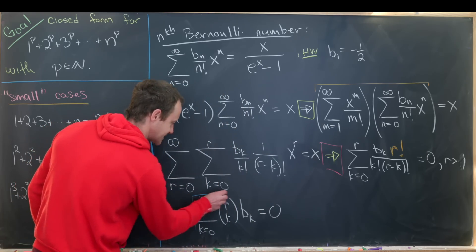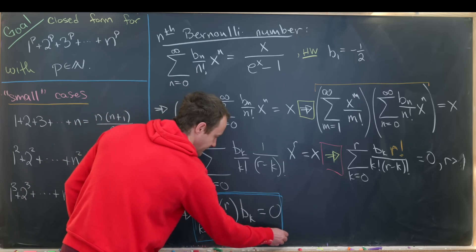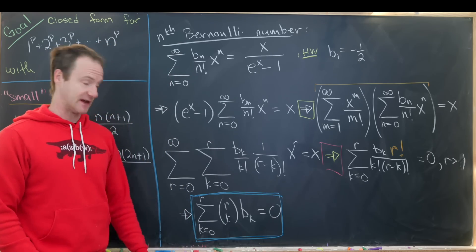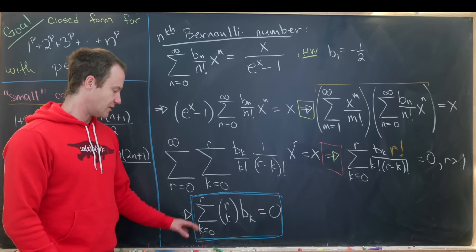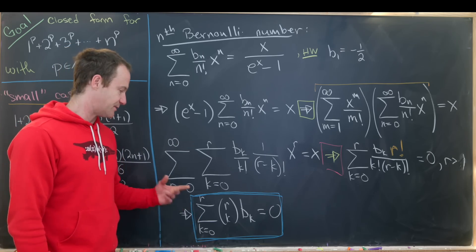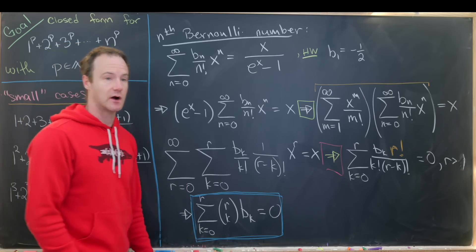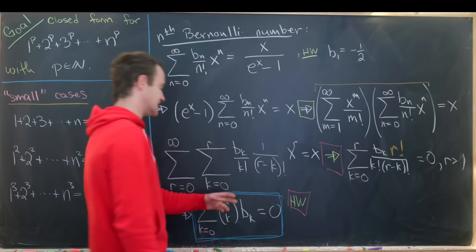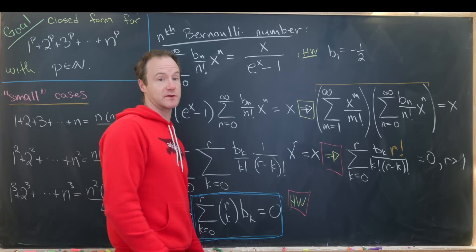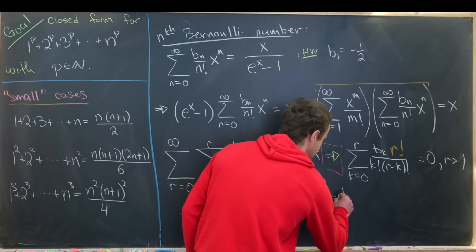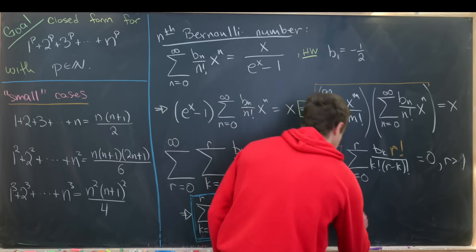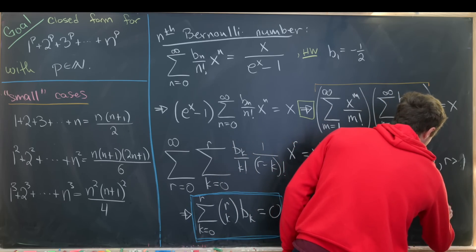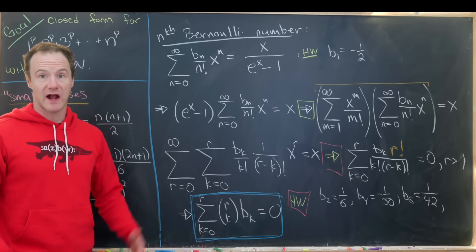This is the best recursive definition for Bernoulli numbers, with b_1 = -1/2 as the seed. As a warm-up exercise, use this recursion to verify that b_2 = 1/6, b_4 = -1/30, and b_6 = 1/42. You can calculate more values if you'd like more practice.